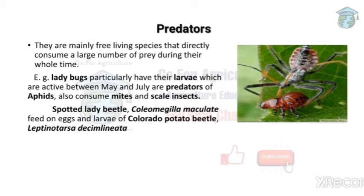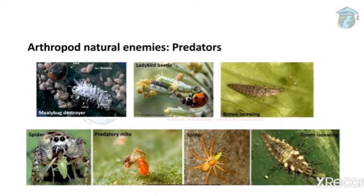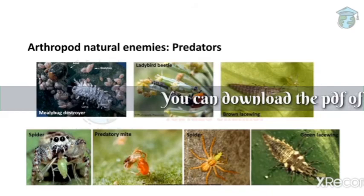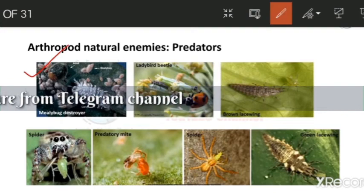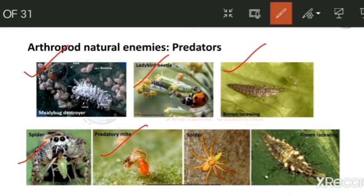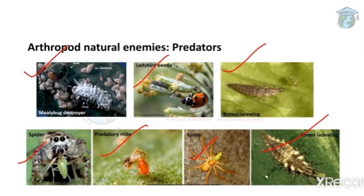For example, the larva of a ladybug eats mites and scale insects — ladybug is a predator for them. The spotted lady beetle is a predator for the Colorado potato beetle, feeding on its eggs and larvae. Arthropod predators include the mealy bug destroyer, ladybird beetle, brown lacewing, spider, predatory mite, and green lacewing. These are well-known examples of arthropod natural enemies as predators. Please go through the pictures and names as they are important.